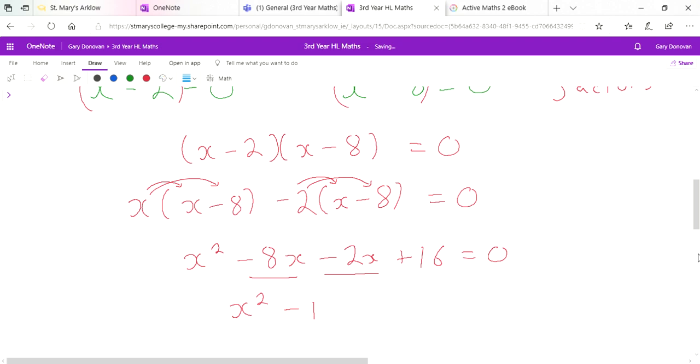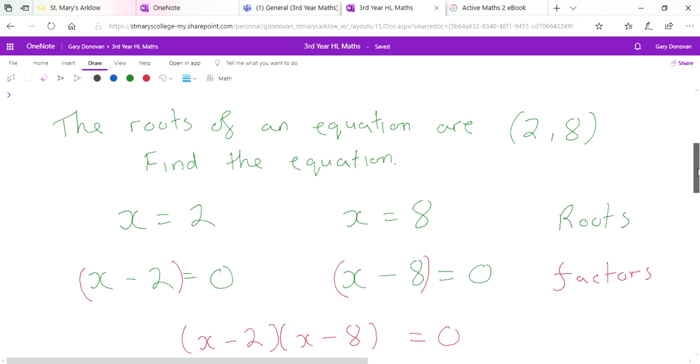So x squared, we can add our like terms. Minus 8x and minus 2x gives us minus 10x plus 16 equals 0. And this is our answer. So not too much more difficult than what we've been doing up until now. All we're doing is we're working backwards.